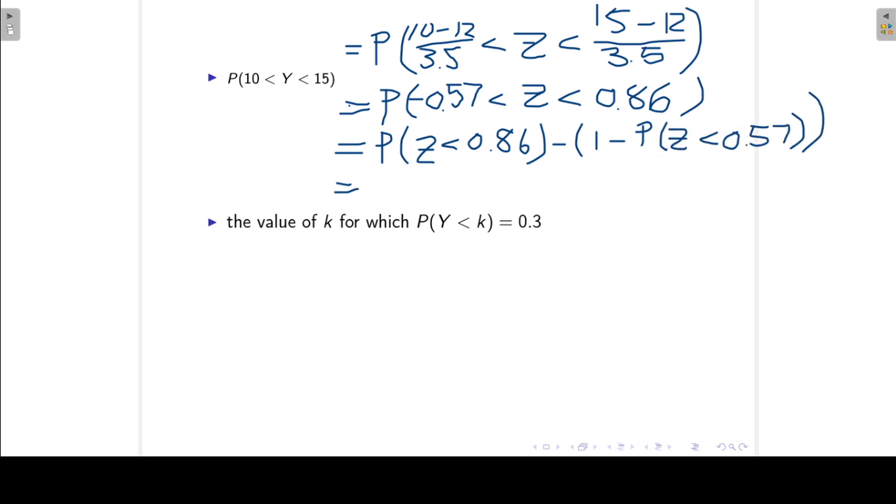And we can look up these probabilities in our tables. Okay, let's look at this last one. Find the value of k, for which the probability y less than k is 0.3.